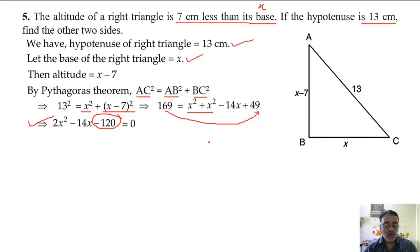Now divide all the terms by 2. What will you get? X squared minus 7x minus 60 equals 0.